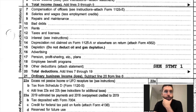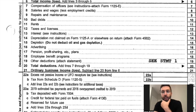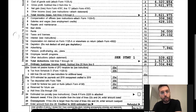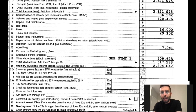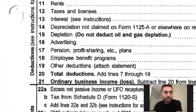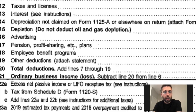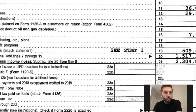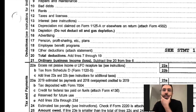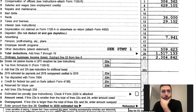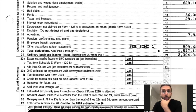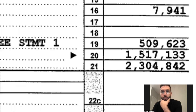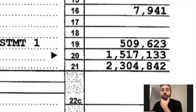Depreciation — they're not taking any depreciation; I do have other videos on my YouTube channel about that. Advertising expense is very little, only about $8,000 on line 16. Pension and profit sharing: nothing. Line eighteen, employee benefit program: nothing. And then you're going to see other deductions — see statement one, which we'll go to in a minute.